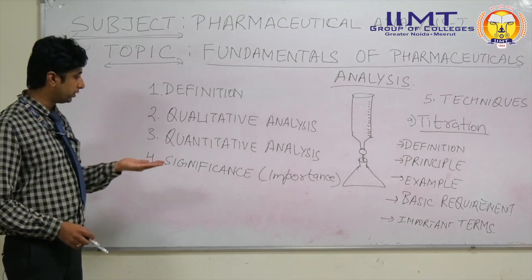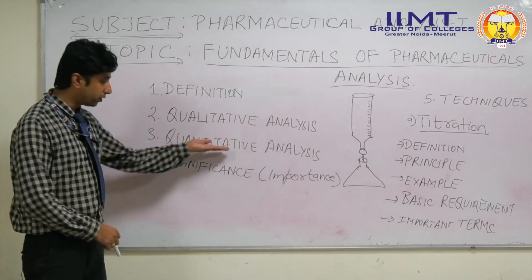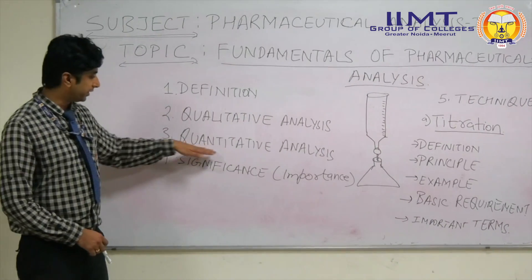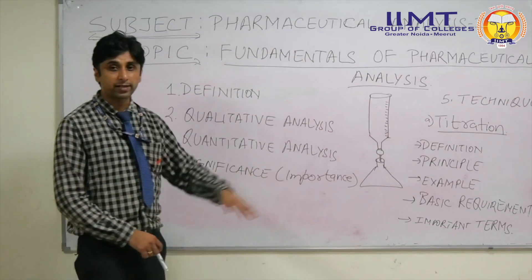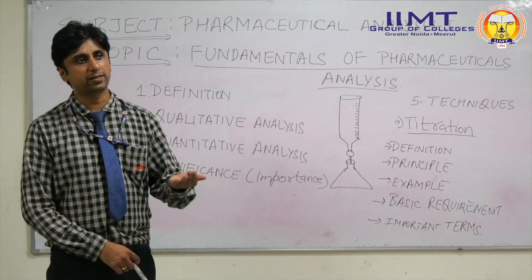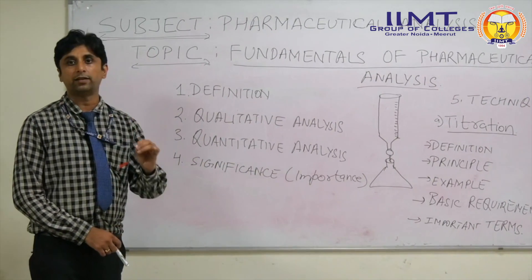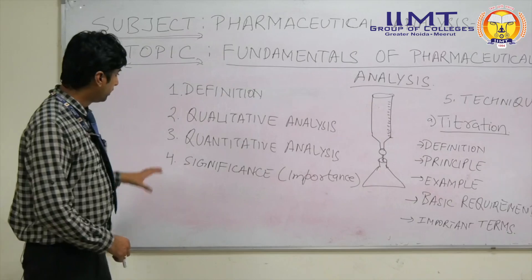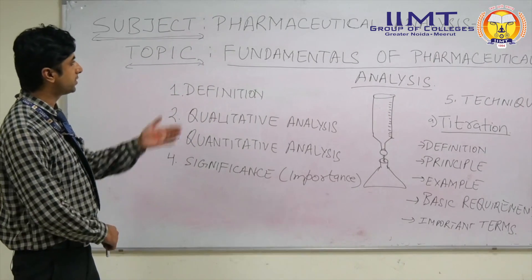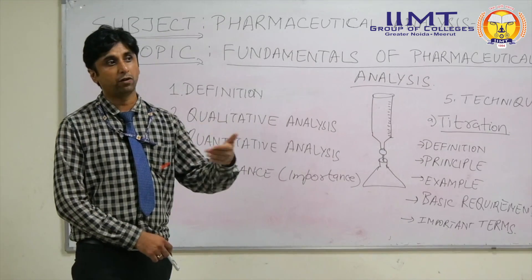The second objective is quantitative analysis. As the word implies, quantitative is an adjective of quantity. So quantitative analysis implies that we are going for estimation of the quantity of a substance — the analyte. Analyte is the substance under investigation. In short, this is a subject which ensures the purity level of a substance.